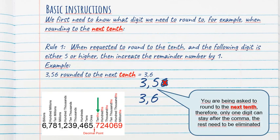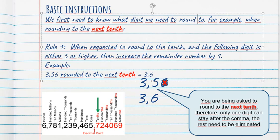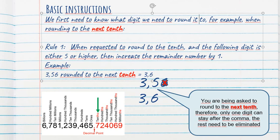Basic instructions. We first need to know what digit we need to round it to. This is exactly what I just told you. First, you need to know what digit you need to round it to. For example, when rounding to the next tenth, look at it here.